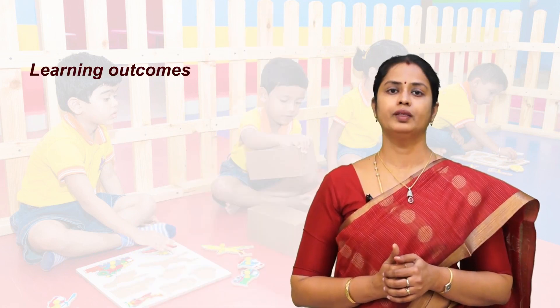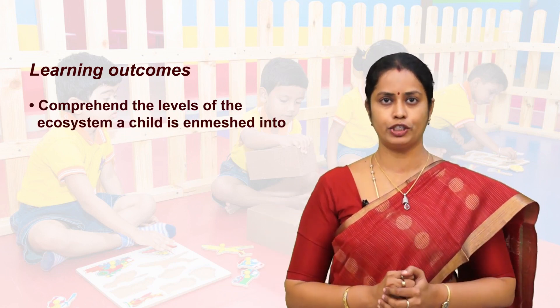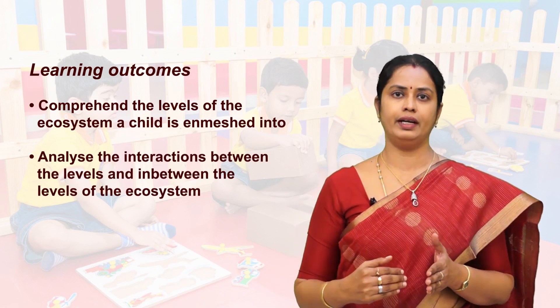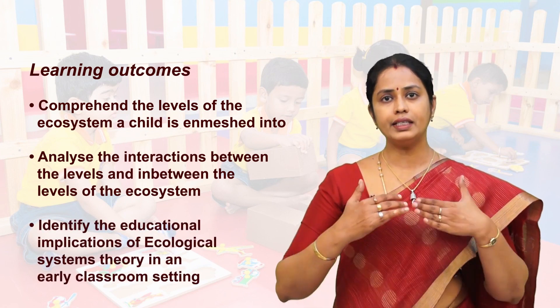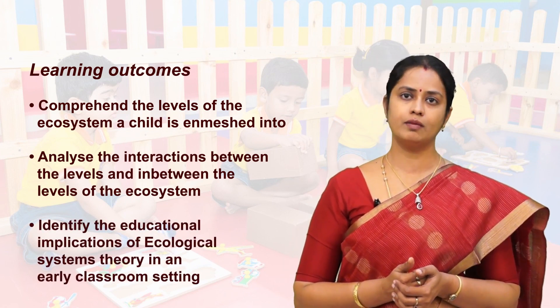This first video chunk of the seventh module deals with ecological systems theory as proposed by Uri Bronfenbrenner. This theory is not a stage theory. It gained significance in explaining how the child himself — in terms of body and mind — and his environment, both immediate and far-off surroundings, affect his growth and development. He also tried to explain how alteration at one level has a ripple effect on all systems. By the end of this video, you will be able to comprehend the levels of the ecosystem a child is enmeshed in, analyze the interactions between and among the levels, and identify educational implications of ecological systems theory in an early classroom setting.